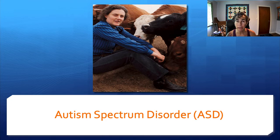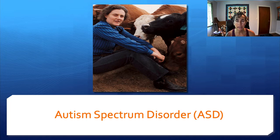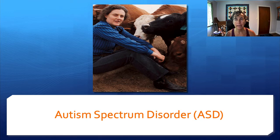This is a picture of Temple Grandin, who is a person with autism who is quite renowned. She has her PhD in animal science and she designs cattle runs and slaughterhouses to be humane, because she can see from the perspective of the cattle. So she's pretty awesome — you've probably heard of her.